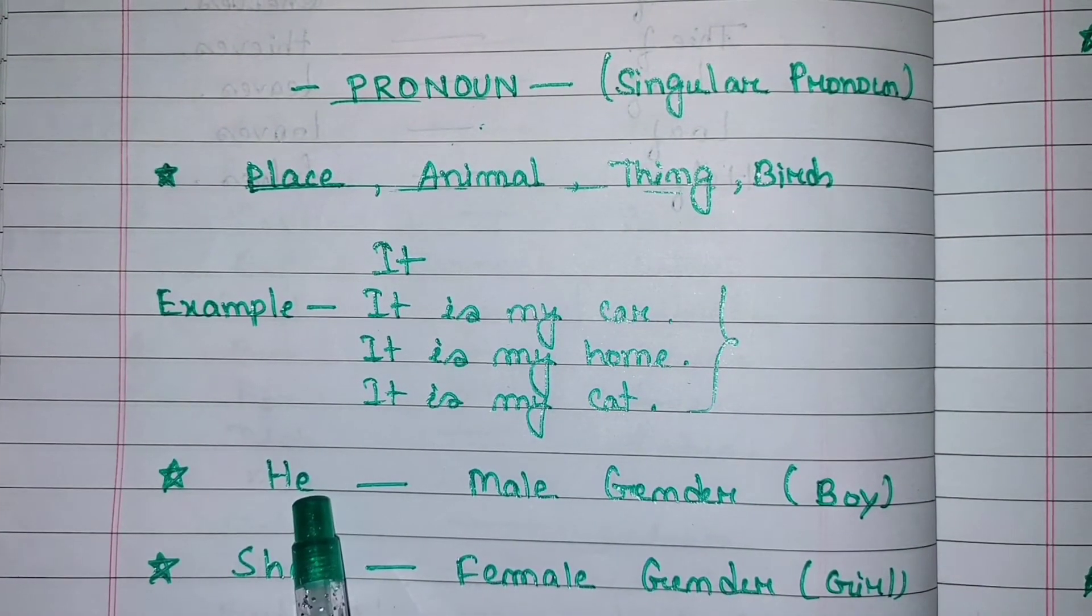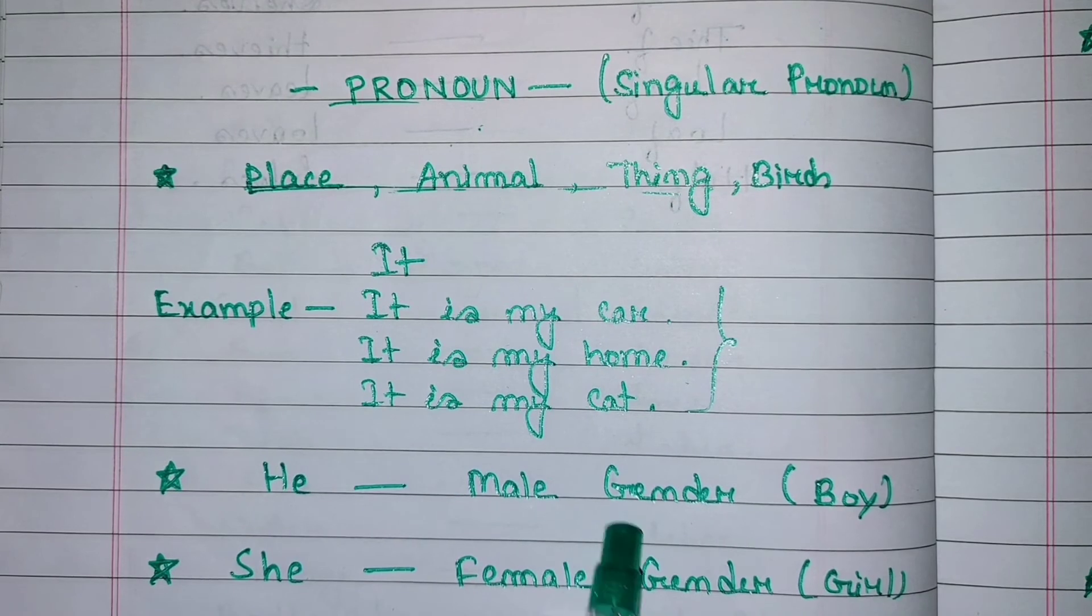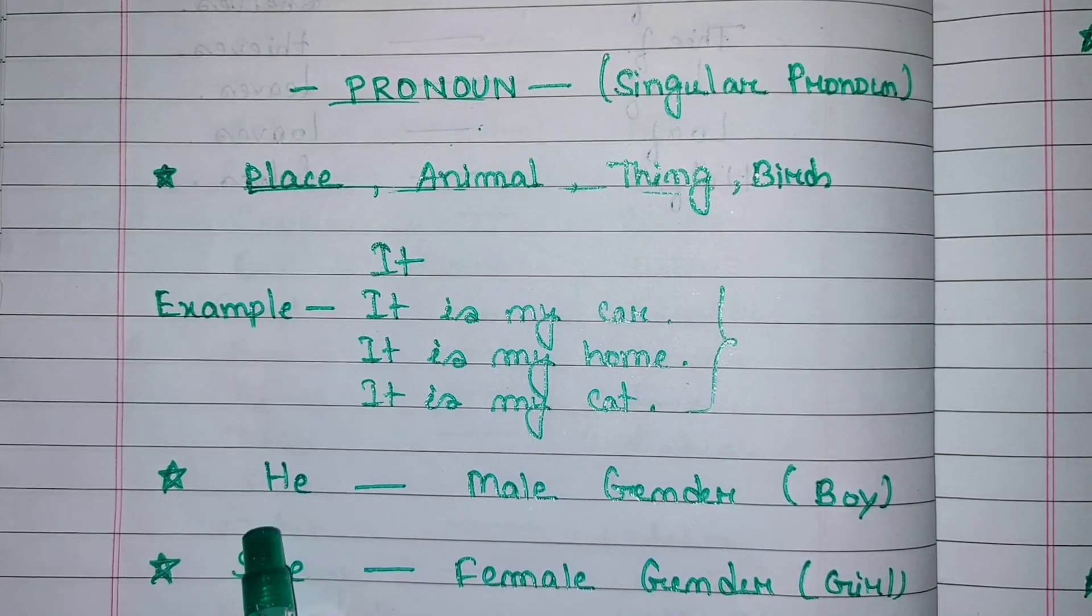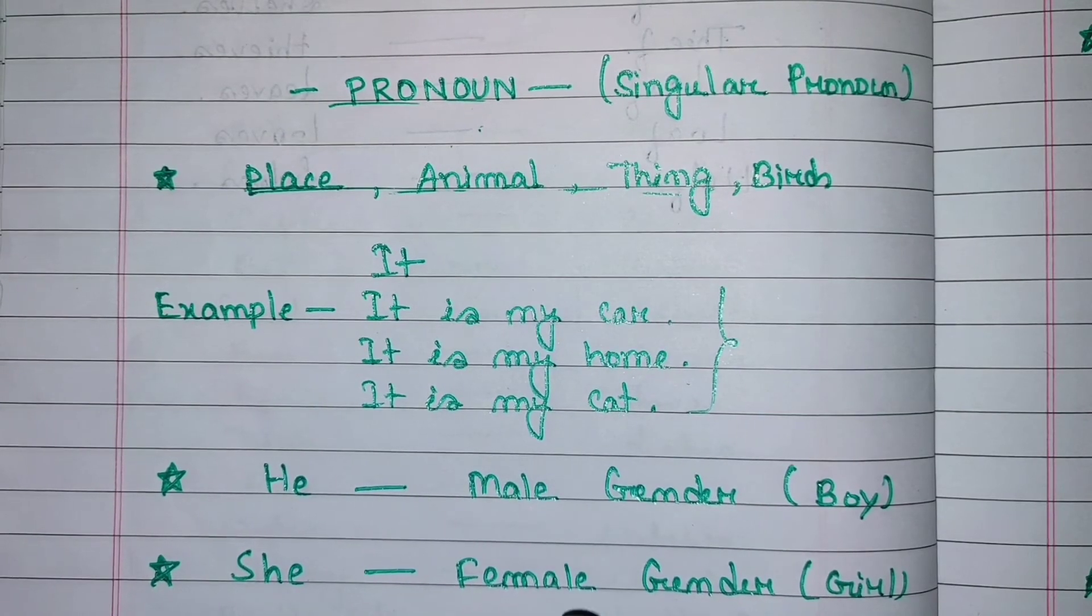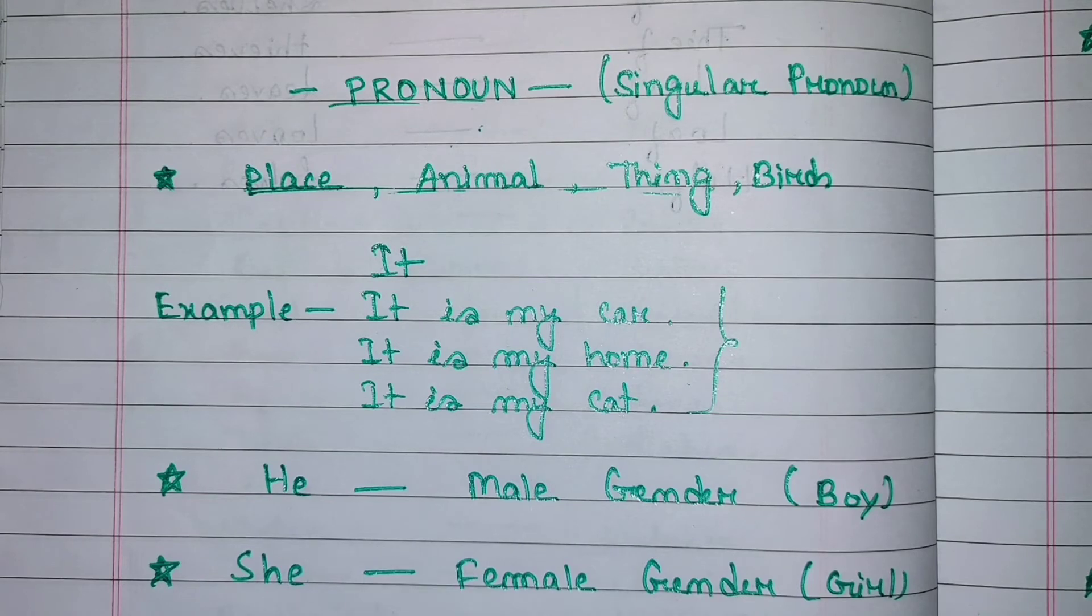He - we use for male gender. Boy, man - for these we use he pronoun. And she - female gender. Girl, lady - for these we use she pronoun.